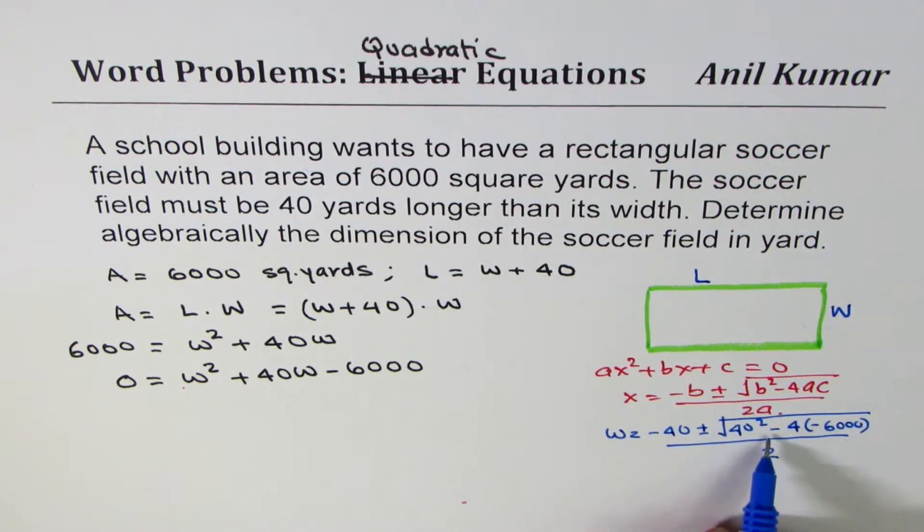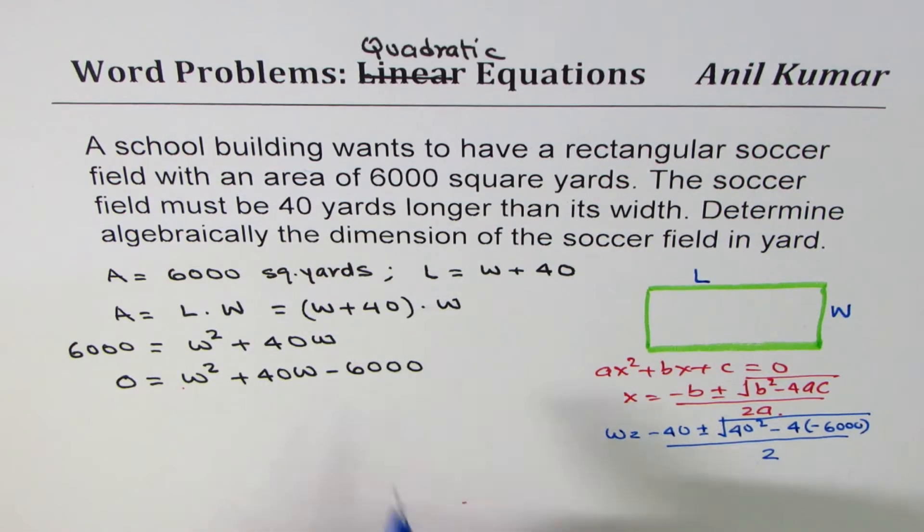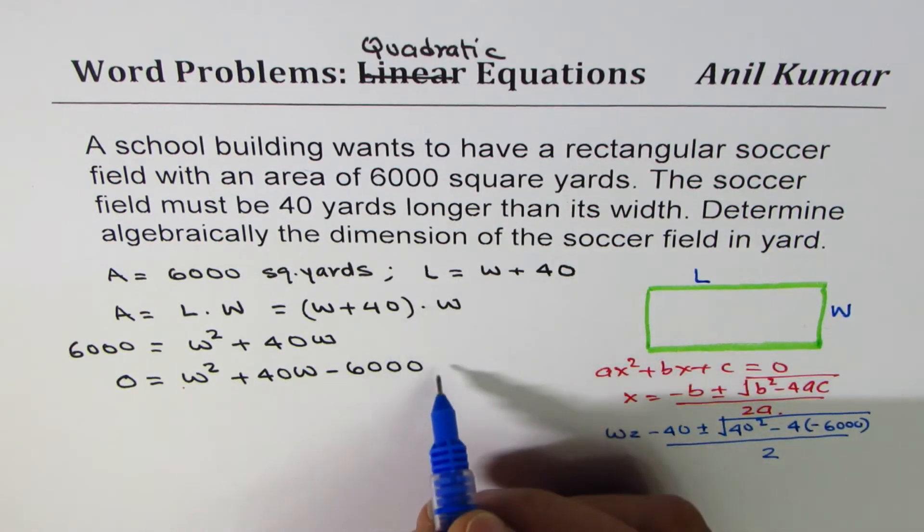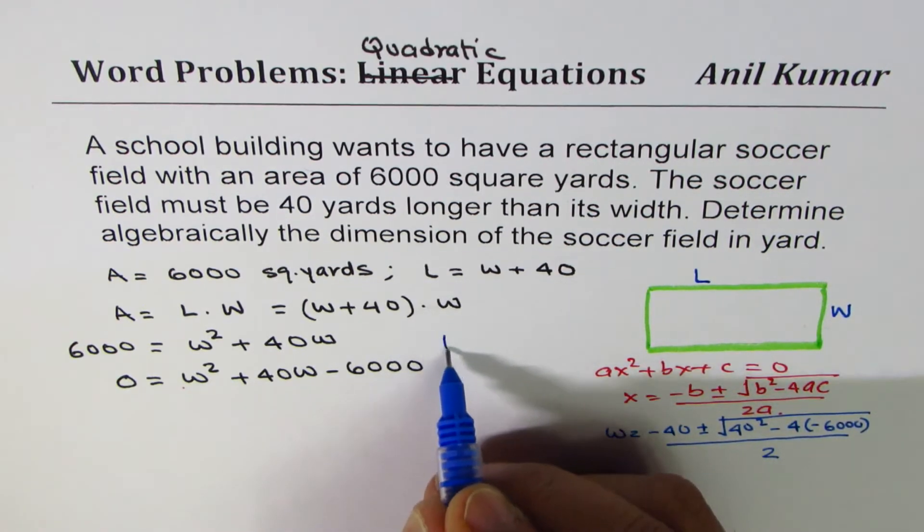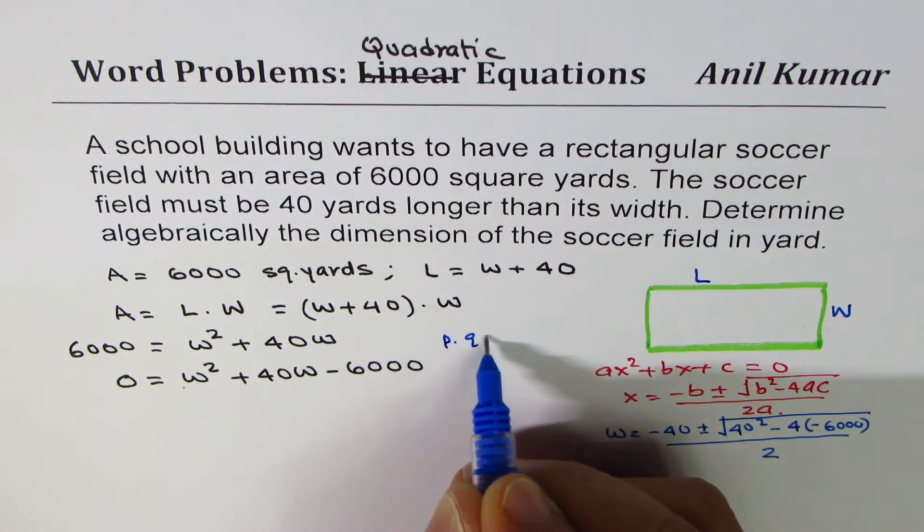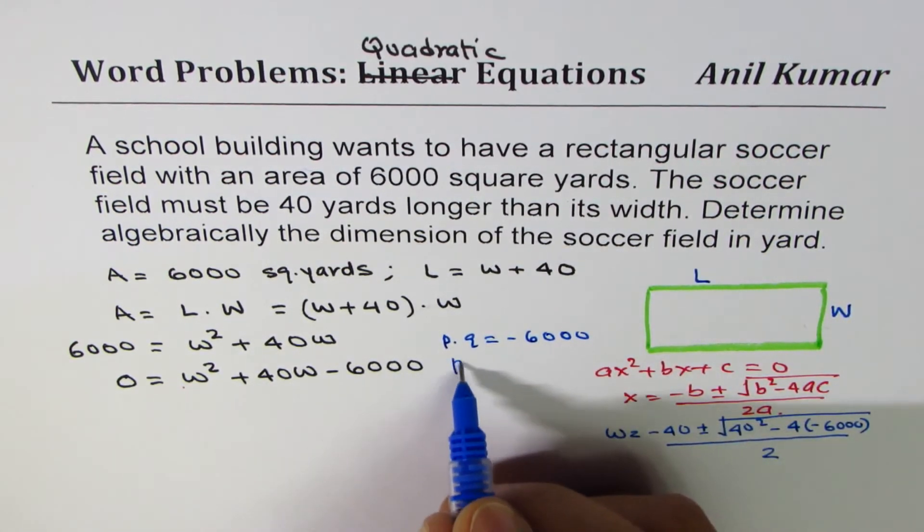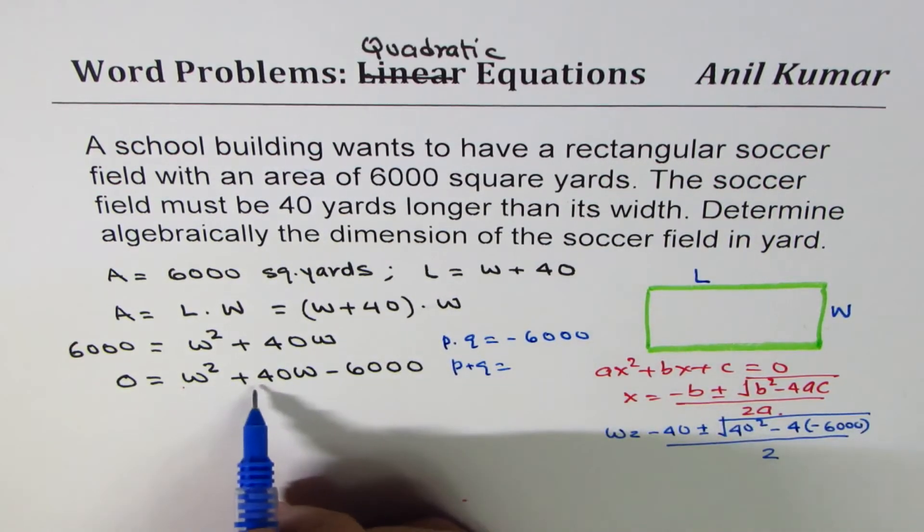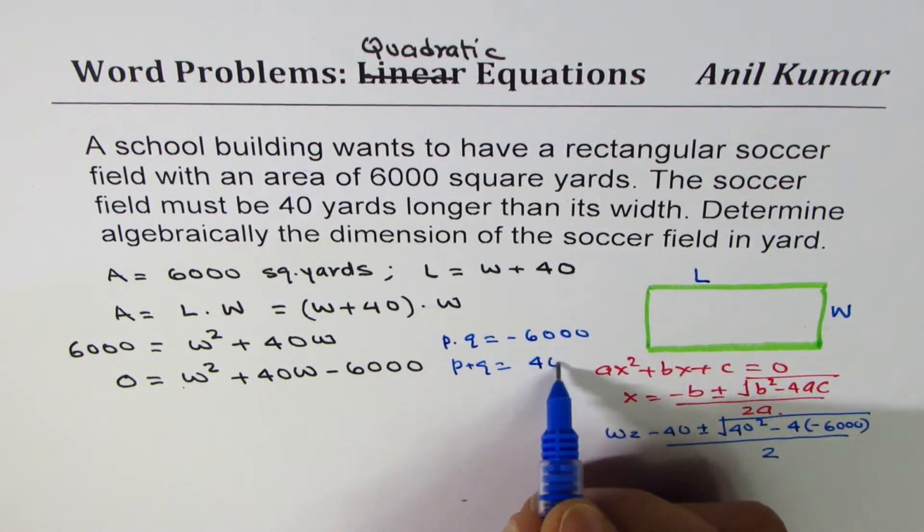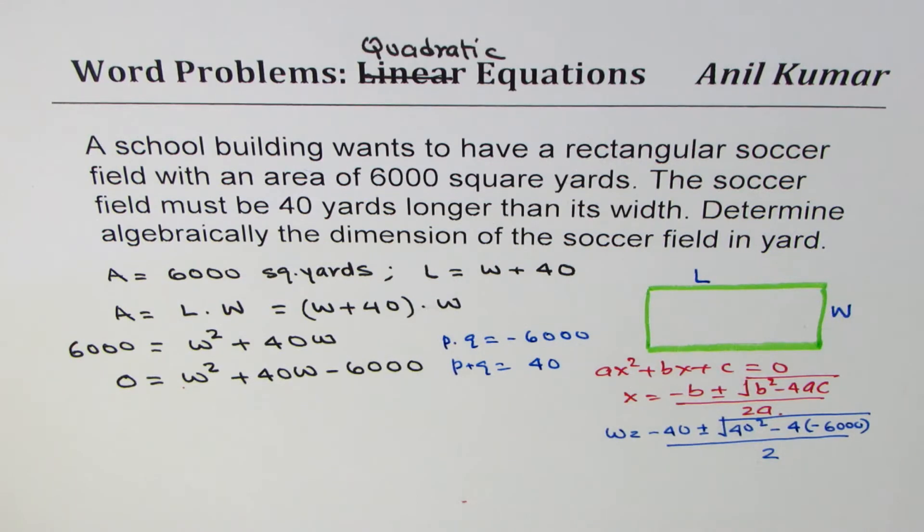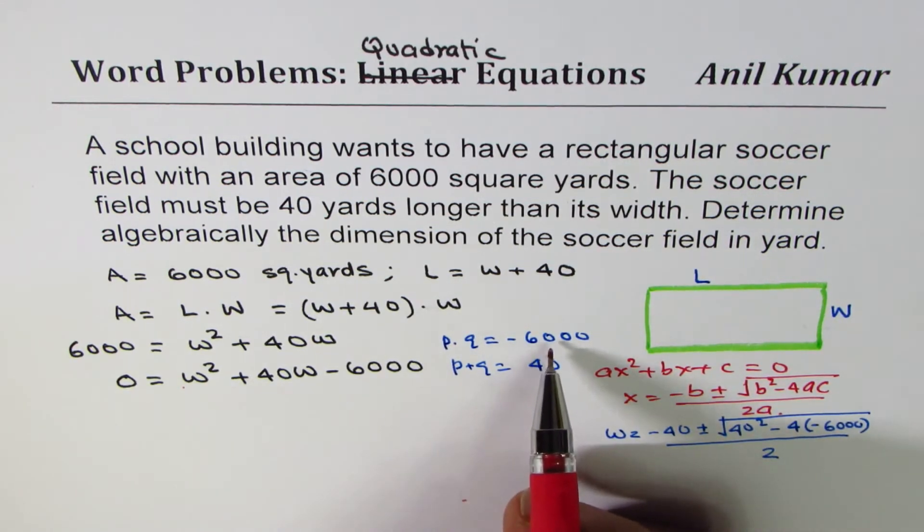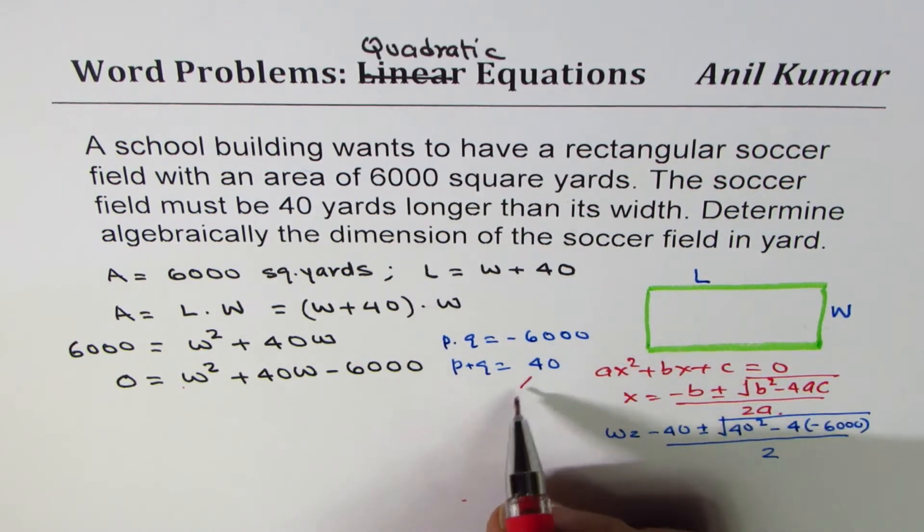The other way is factoring. So we look for two numbers, let's say p and q, whose product is negative 6,000 and sum of these two numbers should be 40. It is not difficult to find these two numbers.